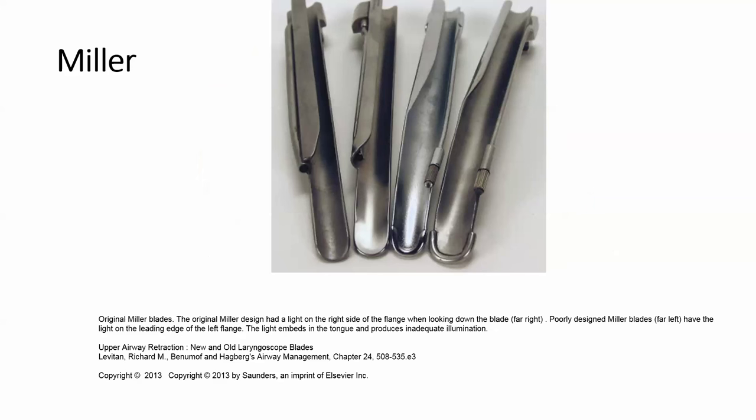The Miller blade — the straight blade — has had various designs over time. This photograph shows how a poorly designed Miller blade, with the light on the leading edge, gives poor lighting, whereas the blades you are familiar with, including disposable ones, have the light originating from the other side.